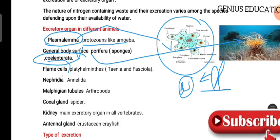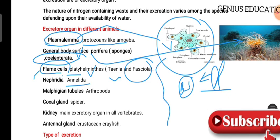Flame cells are found in flatworms and serve as their excretory organs. In Annelida — ring-like body-segmented animals — the excretory organ is called nephridia. Arthropods, meaning jointed-legged animals like insects and honey bees, also belong to this group.